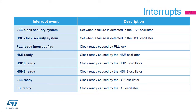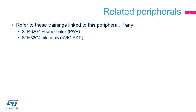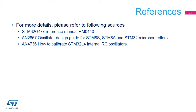This slide lists the RCC interrupts. The LSE and HSE clock security systems, the PLL-ready, and all five oscillator-ready signals can generate an interrupt. For more details, please refer to application note AN2867, an oscillator design guide for STM8S, STM8A, and STM32 microcontrollers, and application note AN4736, which explains how to calibrate STM32L4 internal RC oscillators.